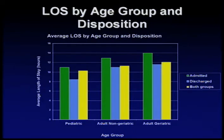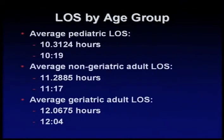The average overall pediatric length of stay is 10.31 hours or 10 hours and 19 minutes. The average non-geriatric adult length of stay is 11.29 hours or 11 hours and 17 minutes. The average geriatric adult length of stay is 12 hours and 4 minutes.